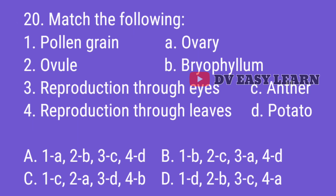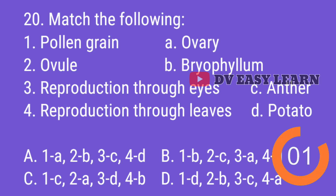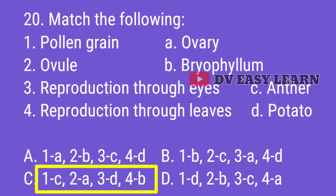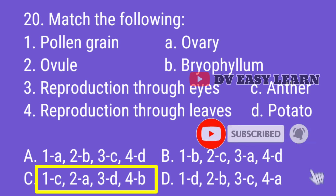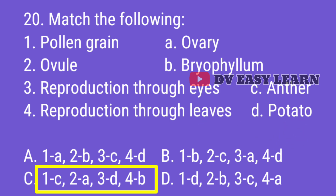Question 20. Match the following. Correct option: 1C, 2A, 3D, 4B. Pollen Grain — Anther; Ovule — Ovary; Reproduction through stem — Potato; Reproduction through leaves — Bryophyllum.